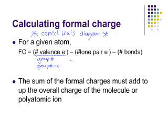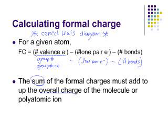Then you're going to subtract out the number of lone pair electrons, and then subtract out the number of bonds attached to whatever atom you're working on. These calculations are actually very, very simple. The sum of the formal charges must add up to the overall charge of the species — if it's a neutral molecule they should add up to zero, and if it's a polyatomic ion it should add up to the overall charge of the polyatomic ion.